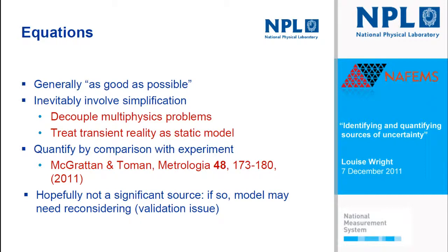In general, you would assume the equations are as good as possible, but inevitably these involve simplification. You tend to decouple multi-physics problems, treat transient problems as static, and neglect the environment — all leading to a simpler model. The only way to really quantify how right your equations might be is by comparison with experiment; there's a recent paper in Metrologia that gives a method consistent with general uncertainty evaluation. Overall, the hope is that equations are not a significant source of uncertainty, but if they are, it suggests the model needs reconsidering — it's primarily a validation issue.